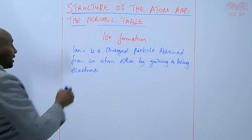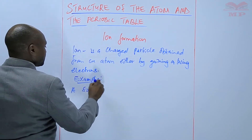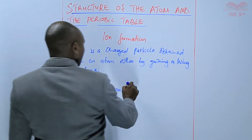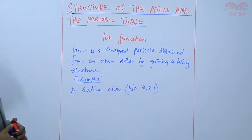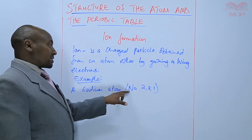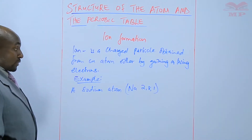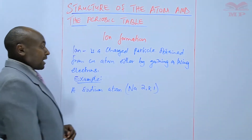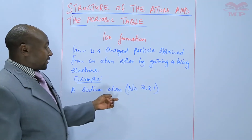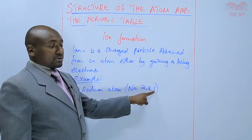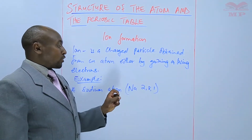For example, if you take a sodium atom — that is Na with electron arrangement 2, 8, 1 — we can say that atom is unstable because not all the energy levels are fully occupied by electrons. The third energy level is not fully occupied, so it is unstable. In order to become stable, this atom can either lose this one electron or gain seven electrons, so that it attains a stable electron arrangement of either 2,8 or 2,8,8.